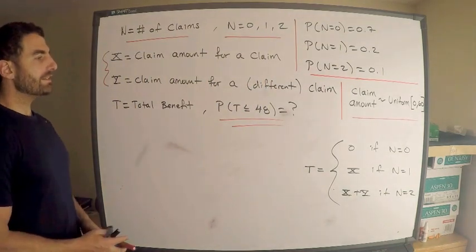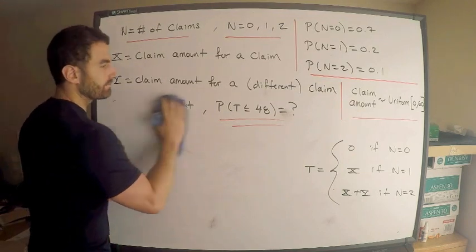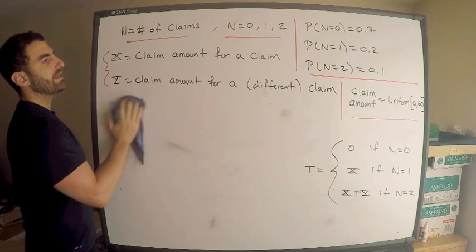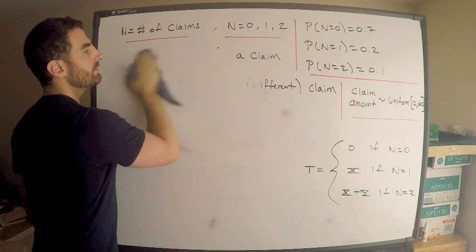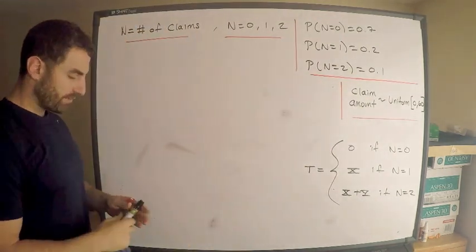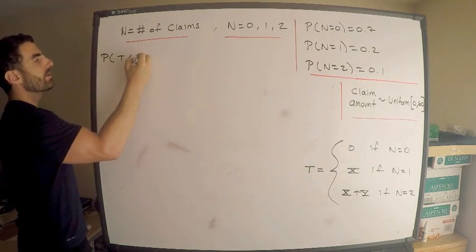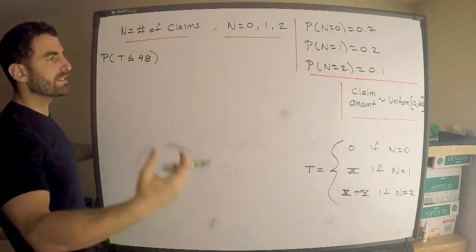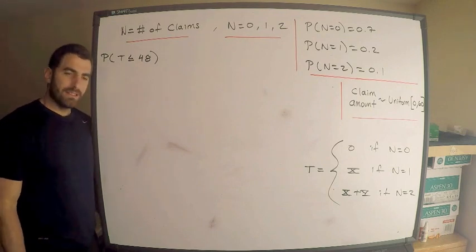All right. So let's find what we're looking for. Let's do that. Let's see what I can say here. Let's get rid of this. Give myself plenty of room. So again, we're after what is the probability that the total benefit is less than or equal to 48 or less than 40. It doesn't matter. It's continuous random variables, so it does not matter.